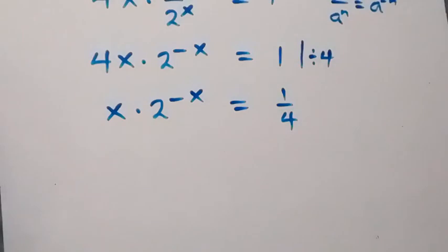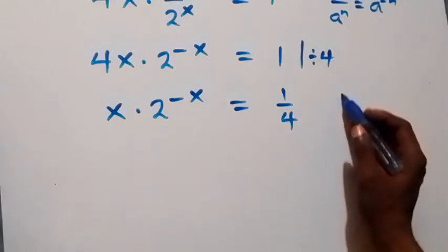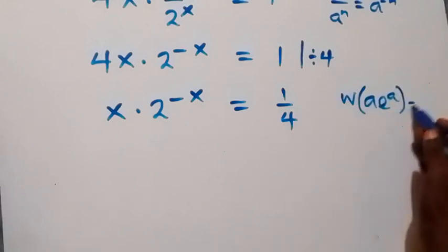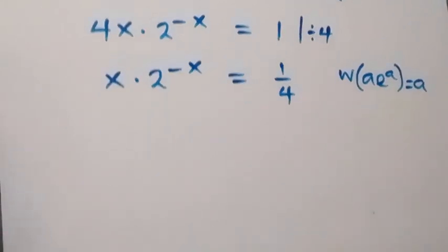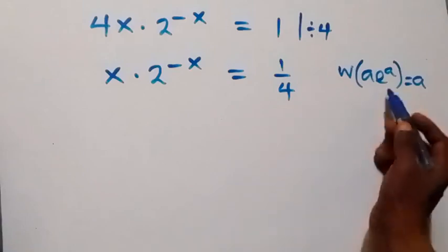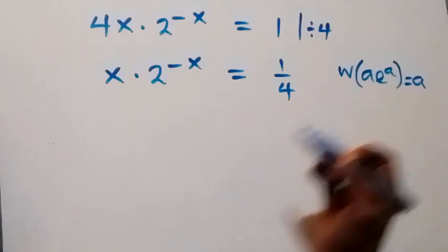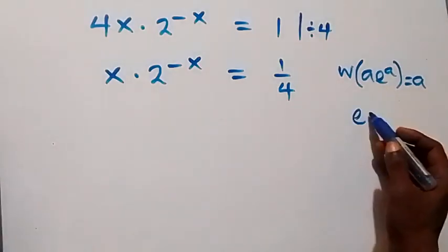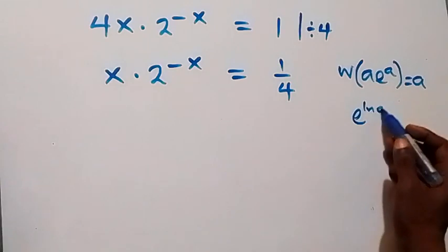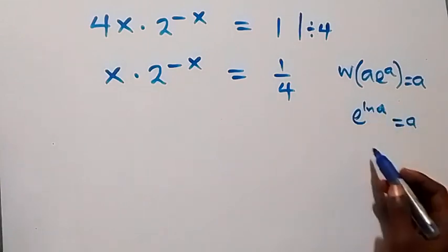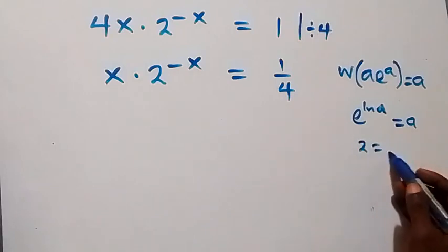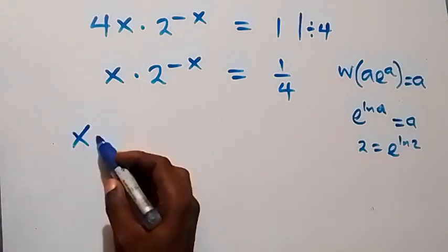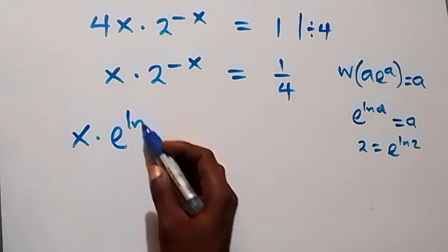From here we want to use the Lambert W function. When we have W of a times e^a, this is the same as a — the power and the coefficient must be equal. Here, let's rewrite 2: from when we have e^(ln a) this is the same thing as a, that means we can write 2 as e^(ln 2).